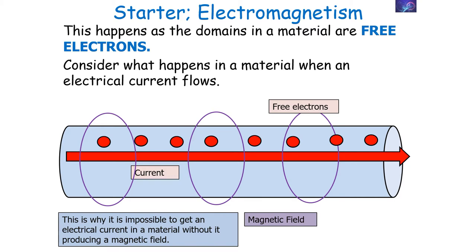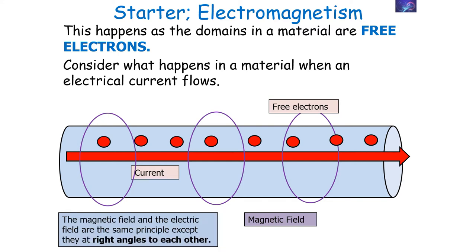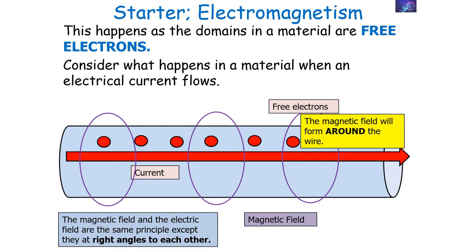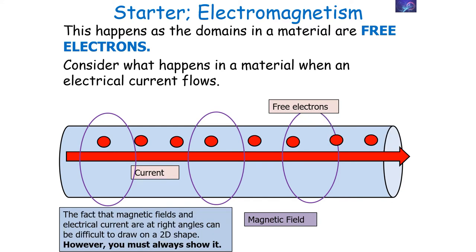It is impossible to have an electrical current in a material without it also producing a magnetic field. Whenever you get an electrical current flowing through a material, that material will also produce a magnetic field. The magnetic field and the electrical field follow the same principle, except they act at right angles to each other, so the magnetic field forms around the wire.